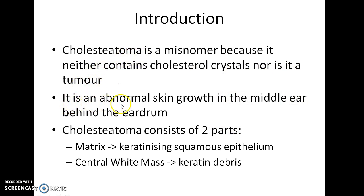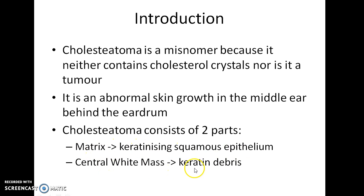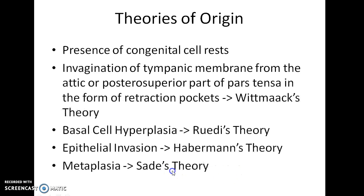Cholesteatoma is an abnormal skin growth in the middle ear behind the eardrum. Cholesteatoma consists of two parts: a matrix containing keratinizing squamous epithelium, and a central white mass made up of keratin debris.